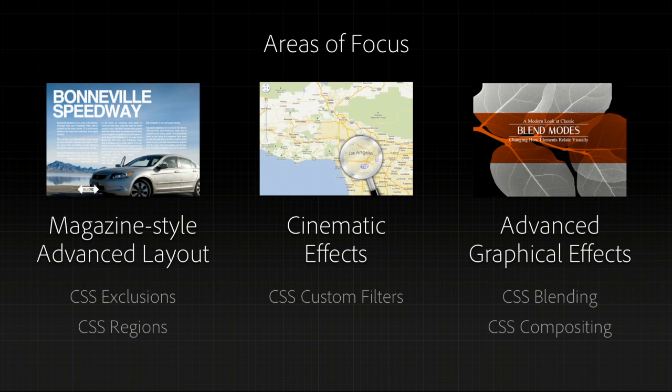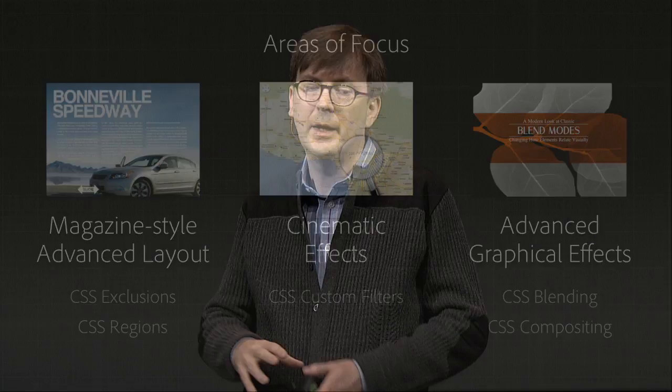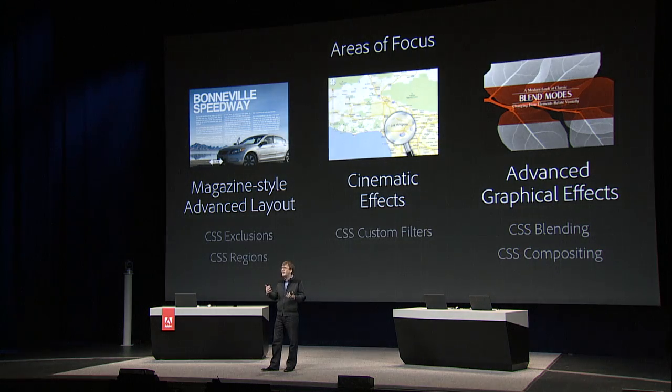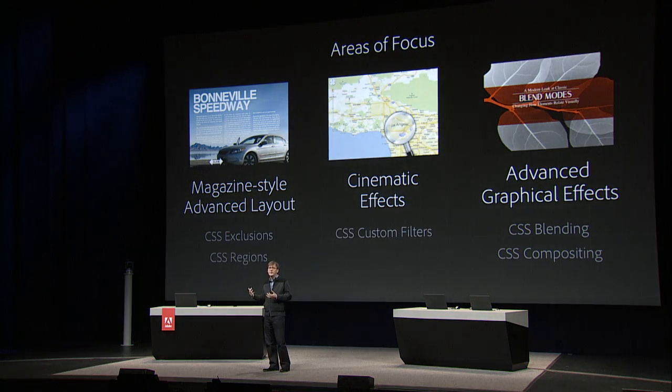There are already great technologies called CSS exclusions and regions that are starting to be deployed. We're looking to move our magazine publishing to take advantage of HTML5 for magazine layouts in things like Digital Publishing Suite, which is the number one way to create magazines for iPad and iOS. In addition to that, we're looking at doing cinematic effects — graphical effects called filters that can change images at runtime — as well as advanced graphical effects like blending and compositing. We're bringing a lot of traditional imaging and printing technology into the interactive world of the web.